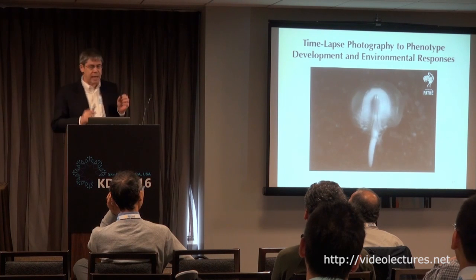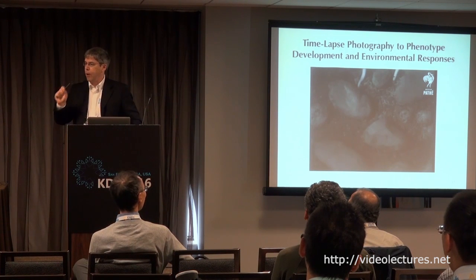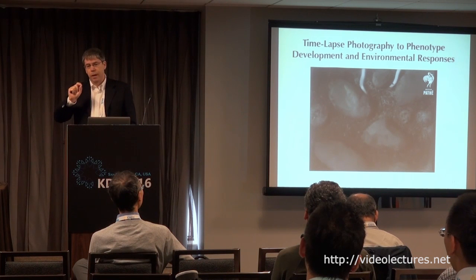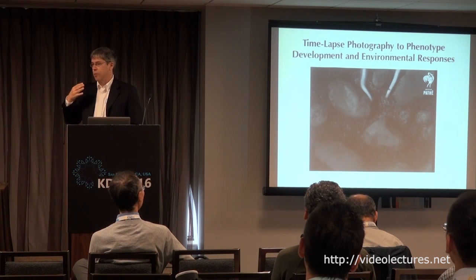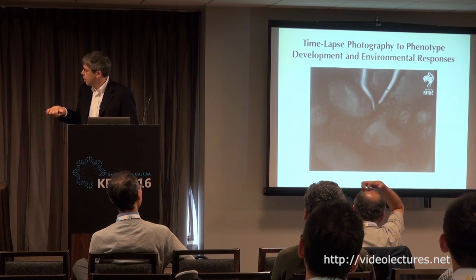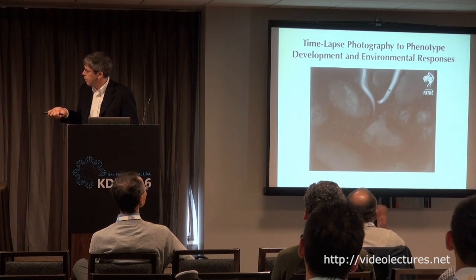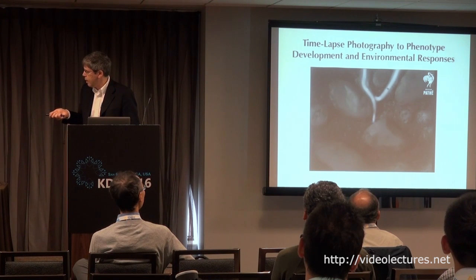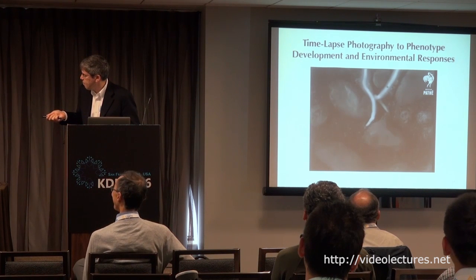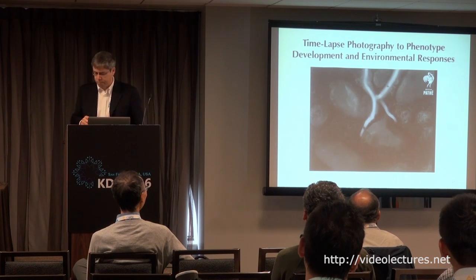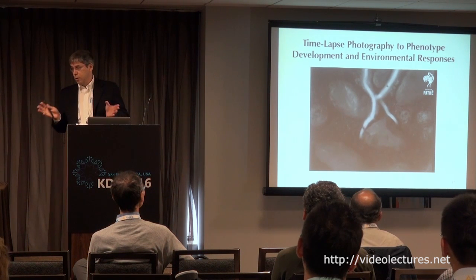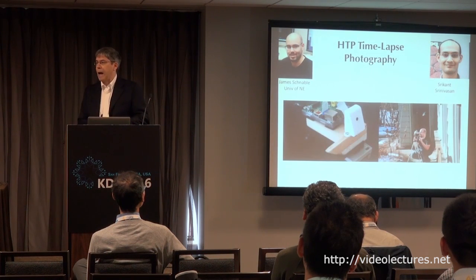By taking pictures frequently, they are able to watch plants develop and respond to the environment. According to the narration, these two roots are actually interacting — there's kind of a fight going on. Though this has been around for a long time, it is not a high-throughput approach. For high throughput, we need new technology.